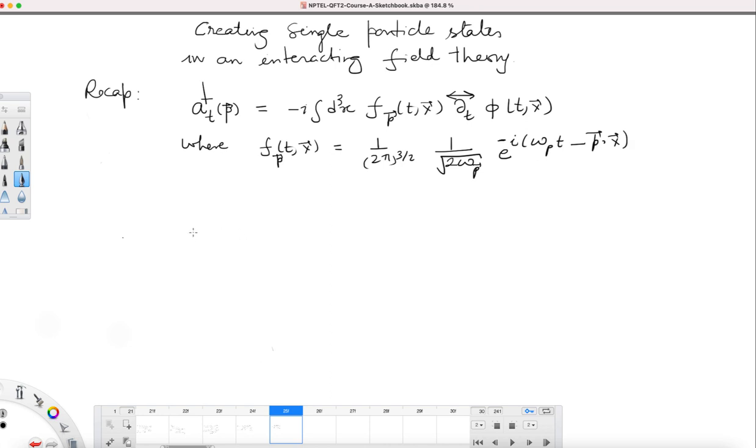We had found explicitly that if you take this operator and act on the vacuum of the interacting theory, you create a linear sum of all possible states. Let me write down all these factors for easy reference.